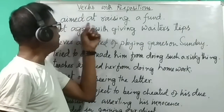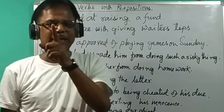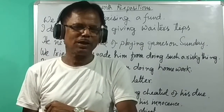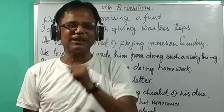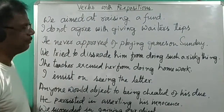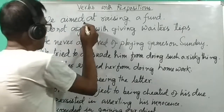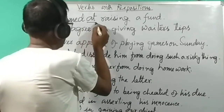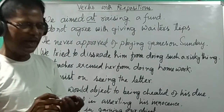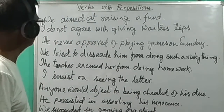We aim at — aim takes a preposition. We aim at raising a farm. Here, 'raising' is the ING form of the verb used after the preposition 'at'.